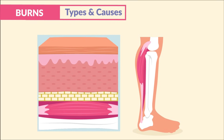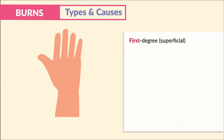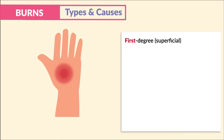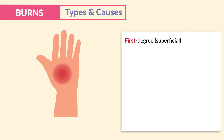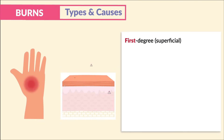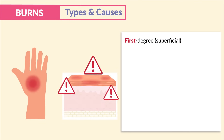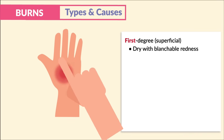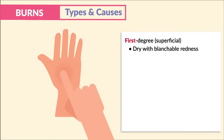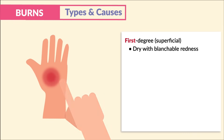In first degree, or superficial burns, we have damage to the epidermis — the top layer. We see dry with blanchable redness, meaning that when you press on the wound, the redness goes away.